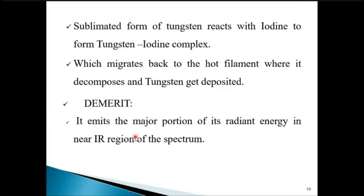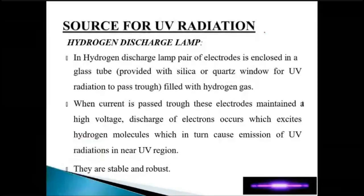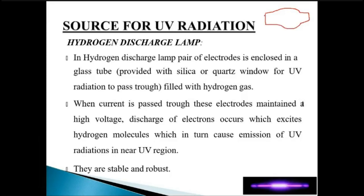We covered the tungsten halogen lamp, and now we are looking at the hydrogen discharge lamp. In a hydrogen discharge lamp, a pair of electrodes is enclosed in a glass tube. Instead of having a tungsten wire connecting two electrodes, we have two electrodes enclosed in a glass tube provided with a silica or quartz window for UV radiation to pass through, filled with hydrogen gas.